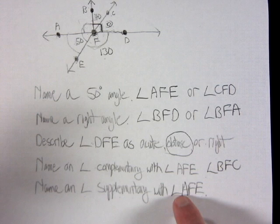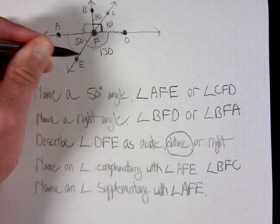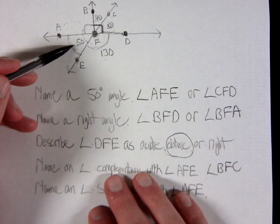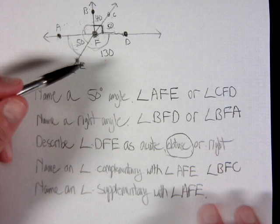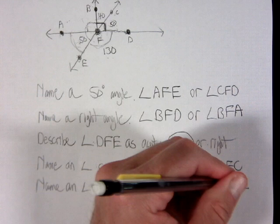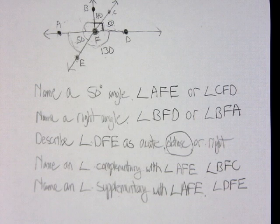The last question asks for an angle supplementary with angle AFE, which is 50 degrees. Supplementary means adding up to 180, so 180 minus 50 equals 130 — I need an angle of 130 degrees. That is angle DFE, which is already labeled on the diagram.